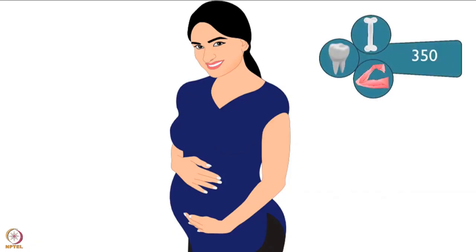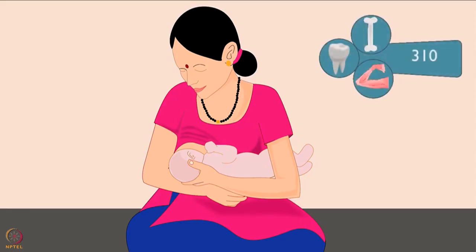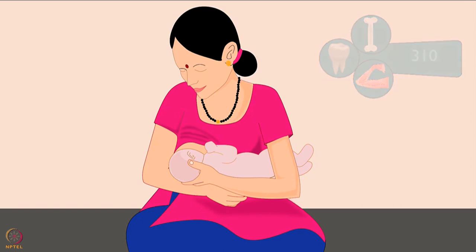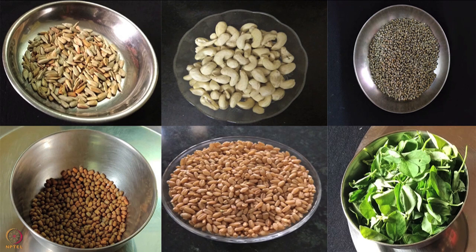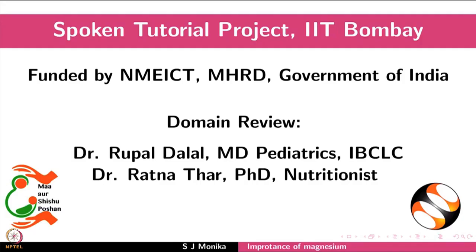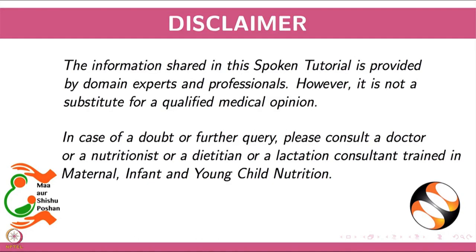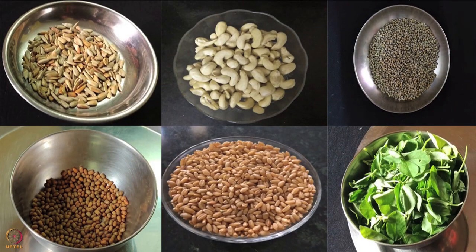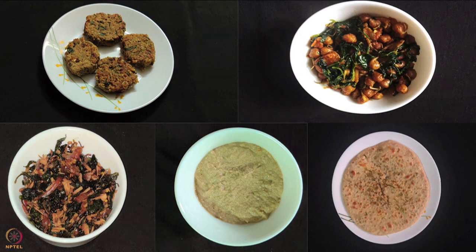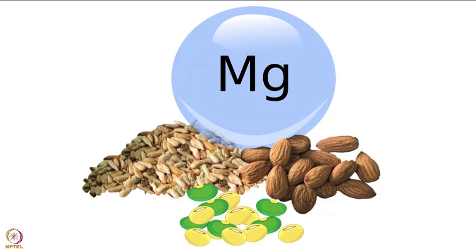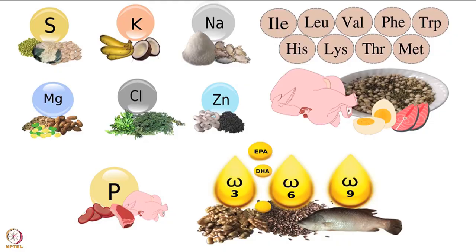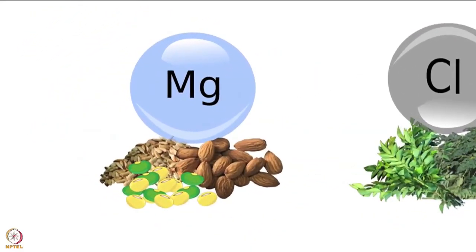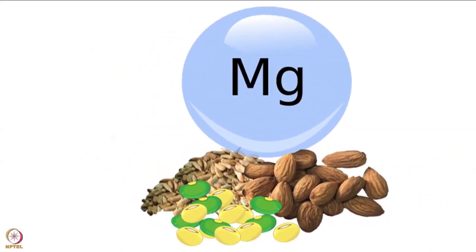For pregnant women 310 to 400 milligrams is advised, and for lactating mothers 310 milligrams is advised. To meet these requirements, include adequate magnesium-rich food in your diet. This brings us to the end of this tutorial. Welcome to the spoken tutorial on magnesium-rich vegetarian recipes. In this tutorial we will learn about benefits of magnesium, vegetarian sources of magnesium, and magnesium-rich vegetarian recipes. Magnesium is a mineral which is an essential nutrient required by the body; it is among the type 2 nutrients.